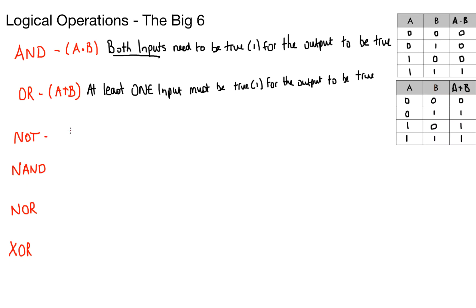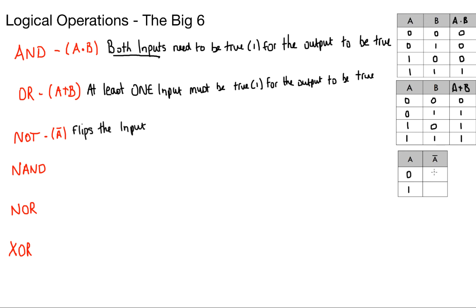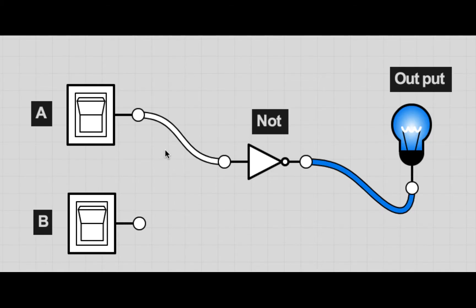The next one we're going to look at is NOT. It's very simple — all you have to do is put a line over the top of your input, and that is a NOT bar. This one's very straightforward: all you have to do is flip the input's value. So looking at the truth table, if my input was a 0 then I flip it to a 1. If my input was a 1, I flip it to a 0. Double checking that: if my switch is not switched on, then it flips the input and provides power to my light bulb. If I turn my switch on and give it the value of 1, then it flips the value and becomes 0.